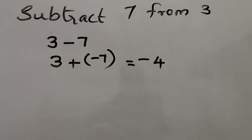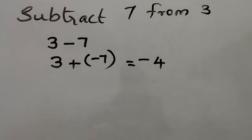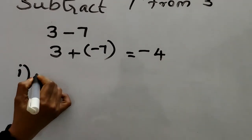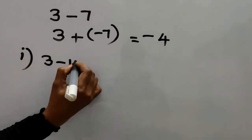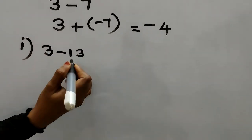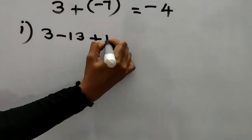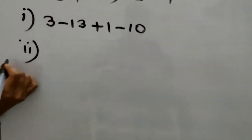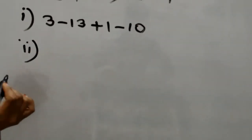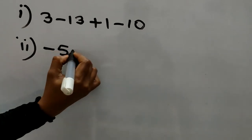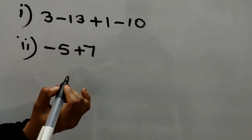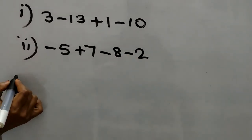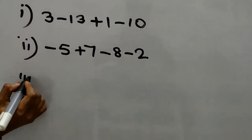I hope you understood well. I'm giving some homework. Please note them down and reply with your answers in the comment box. First: 3 minus 13 plus 1 minus 10. Second: negative 5 plus 7 minus 8 minus 2. Third one is also given.